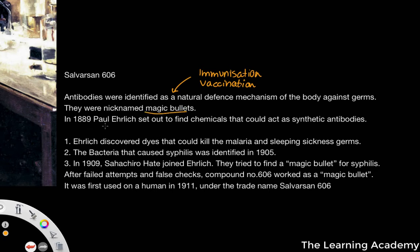In 1889, Paul Ehrlich set out to find chemicals that could act as almost synthetic antibodies, because if you've got synthetic antibodies, that could prove very useful in the development of medicine. He discovered dyes that could kill malaria and sleeping sickness germs. The bacteria that caused syphilis was also identified in 1905.